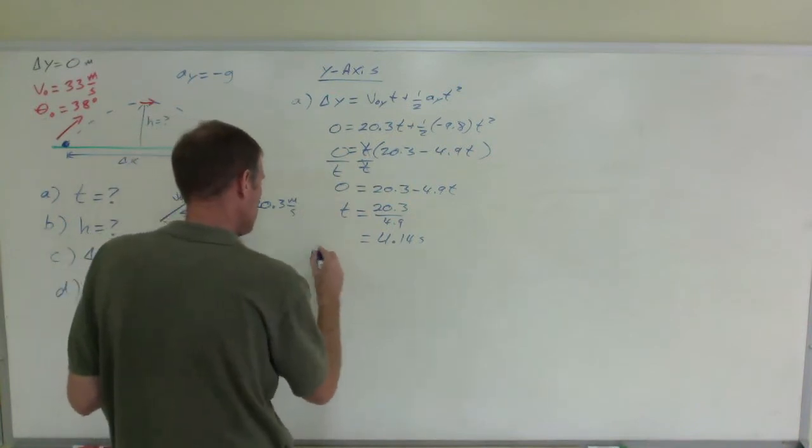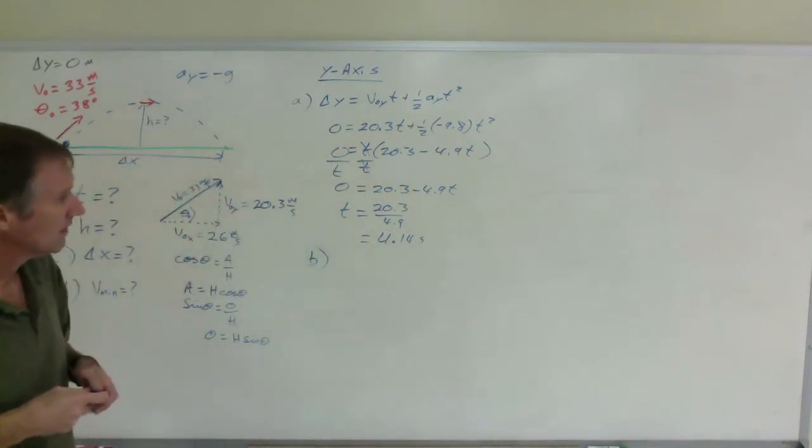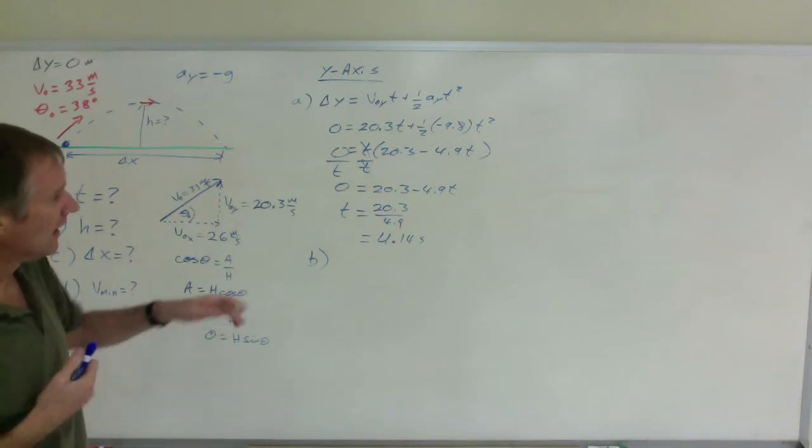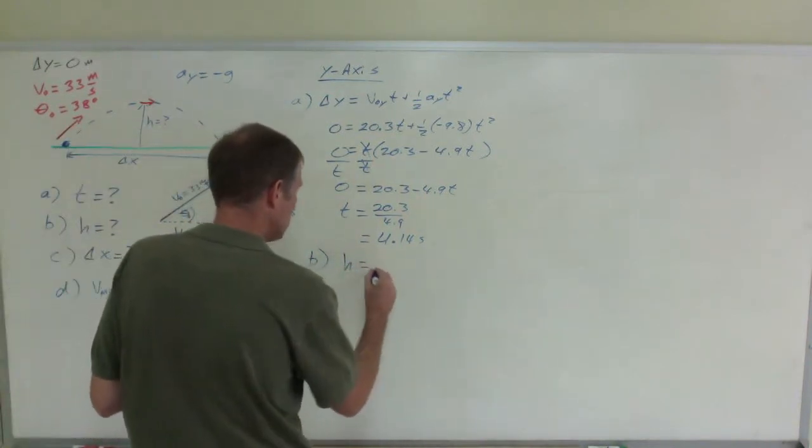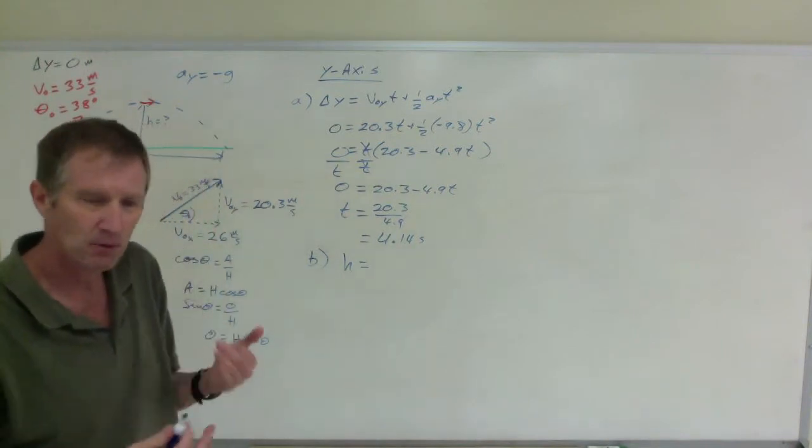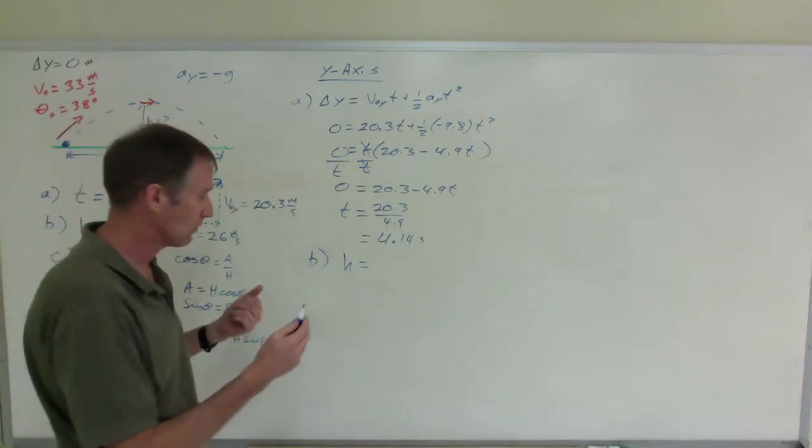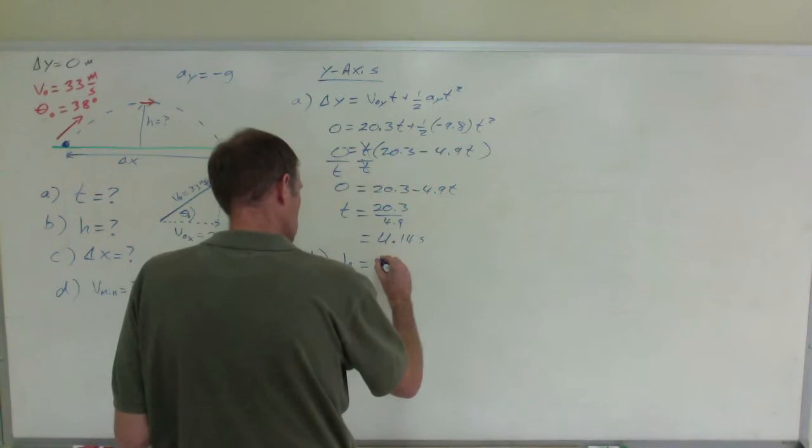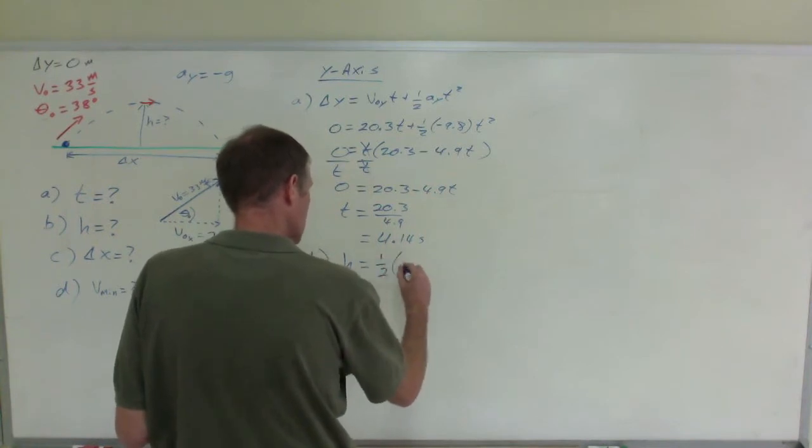To find part B, to find the height, there is a variety of ways I can do this. I am going to use this equation. I am going to use an h for height. You can use a delta y maximum or delta y top or whatever you want. But I am going to use an h. I am choosing to use this equation.